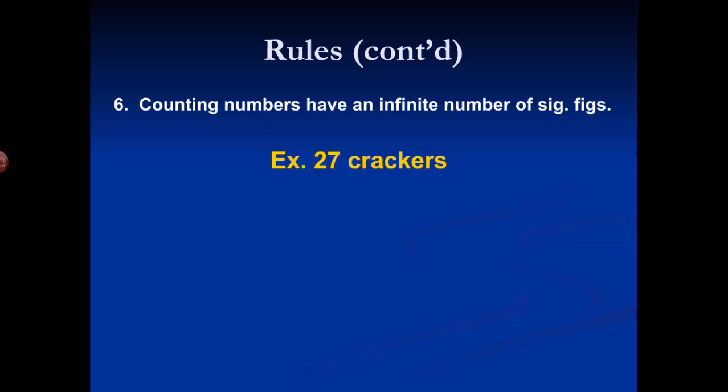Rule six only occurs at certain times. One of those times is when we count anything — for example, if we count crackers. When we count items, we assume that count is infinitely certain. There's no uncertainty when you count. When you count something, you're 100% certain. So counting numbers are considered to have an infinite number of significant figures.